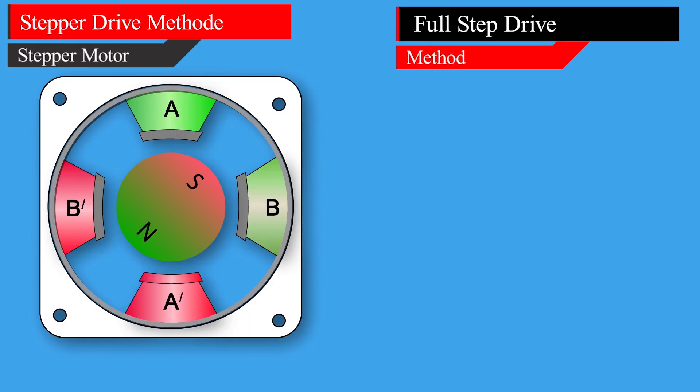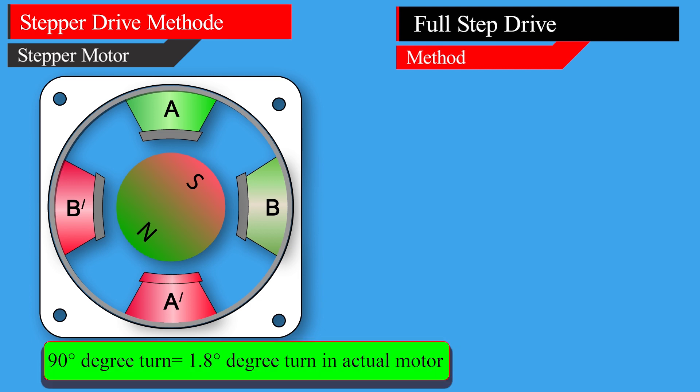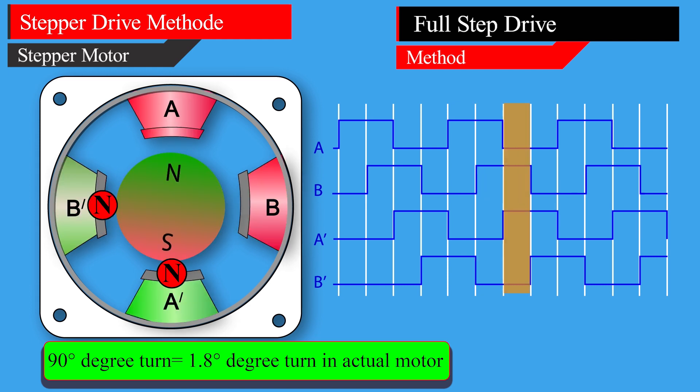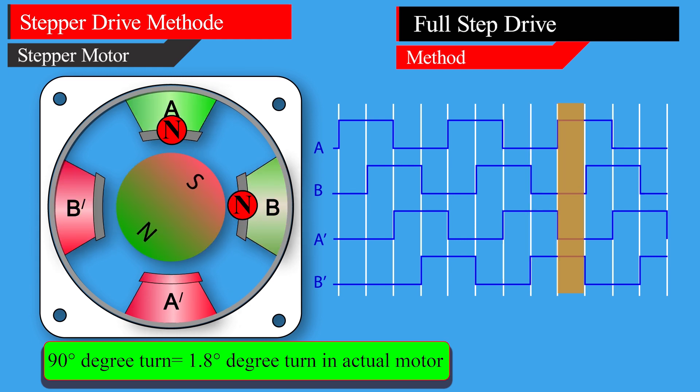Full-step drive method: once again, every 90 degrees represents 1.8 degrees rotation in an actual motor. If both phases A and B are energized as north poles, the south pole of the rotor will be lined up directly in the middle of two energized phases, two north poles of the stator. The rotor south pole will follow this sequence and will always line up in the middle of two energized phases. Full-step drive mode provides much higher torque output because we always have two active coils at a given time. However, this doesn't improve the resolution of the stepper, and again the rotor will make a full cycle in four steps.